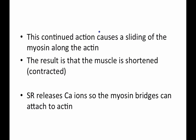So the continued action of these actin subunits keeps them pulling past the myosin subunits, getting closer to the center of the sarcomere. These ones are moving this way, those ones are moving this way — that continued action causes a sliding of the myosin along the actin.